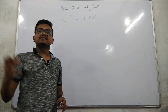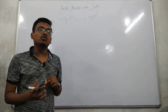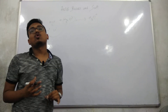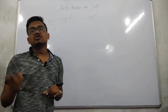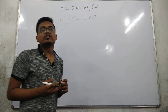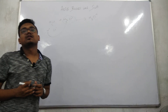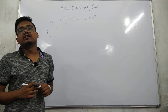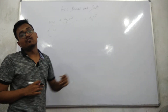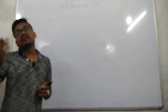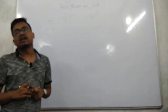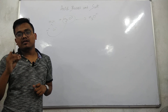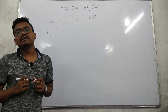A base is a compound which reacts with the hydronium ion of an acid to give salt and water. For example, CuO and Cu(OH)2 are bases — when they react with the hydronium ion of an acid, they give salt and water. There are many bases.